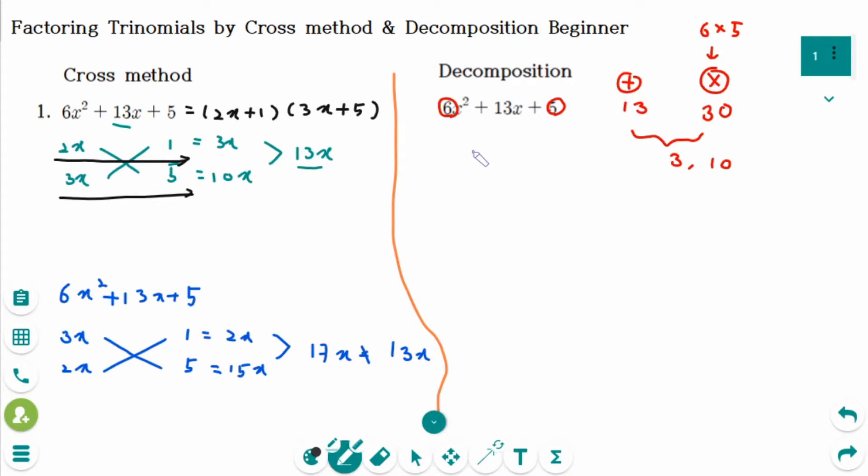So now the trinomial can be rewritten as 6x squared plus 3x plus 10x plus 5. The middle term has been expanded.